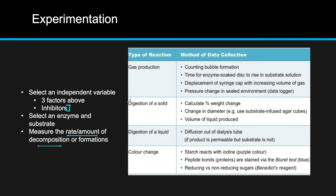You have to measure the rate and the amount of decomposition. Here's a table of different things to look out for when making an experiment: what products are we producing, what are we doing? For the digestion of a solid, we can look for change in weight, change in diameter — say we took a lactose cube and put it in the enzyme. We can also measure volume of liquid produced. All of these are different ways to collect data. This is just getting you into the process of thinking experimentally.